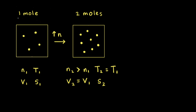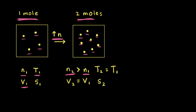For our next situation, we're once again starting with one mole of an ideal gas at a certain temperature T1 and a certain volume V1. This time, we're going to increase the number of moles from one mole of an ideal gas to two moles of an ideal gas — so if we had four particles on the left, now we have eight particles in the particulate diagram on the right. The final number of moles N2 is greater than the initial number N1, but we're going to keep the temperature the same and the volume constant, so T2 equals T1 and V2 equals V1.